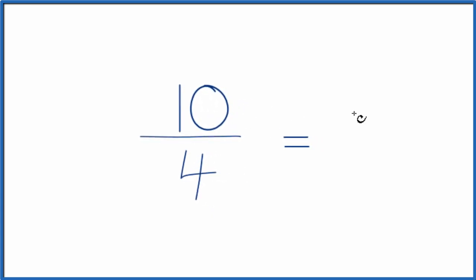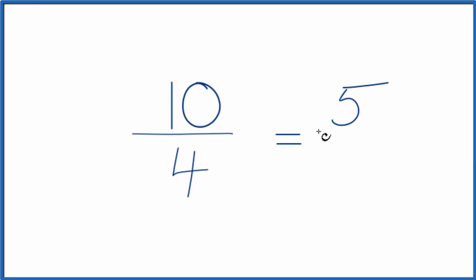So if we divide 10 by 2, we get 5. If you divide 4 by 2, you get 2. So the greatest common factor was 2, because we can't reduce or simplify 5 over 2 any further. So the fraction 10 fourths can be simplified down to 5 halves.